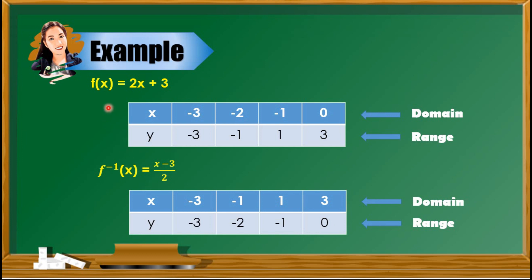Let's say we have the function f(x) = 2x + 3. If we input the values of x: negative 3, negative 2, negative 1, and 0, we get the corresponding values of y, or f(x), which are negative 3, negative 1, 1, and 3.